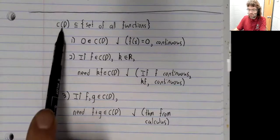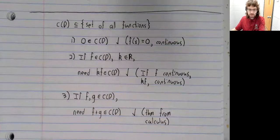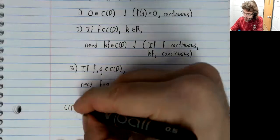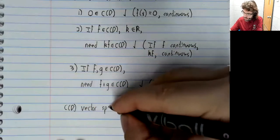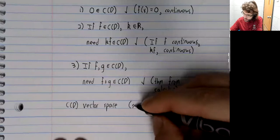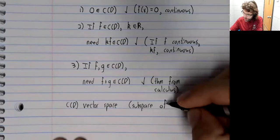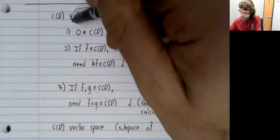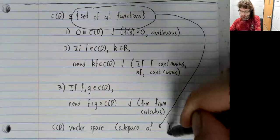And because this set lives inside a vector space, those three conditions are all we need to proclaim that this set is a vector space. We can say further that it's a subspace of this vector space.